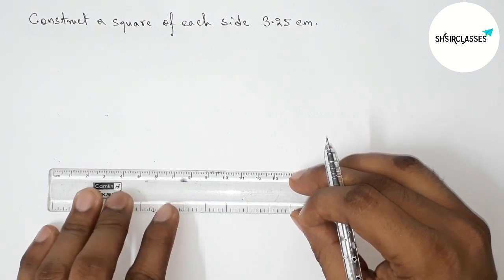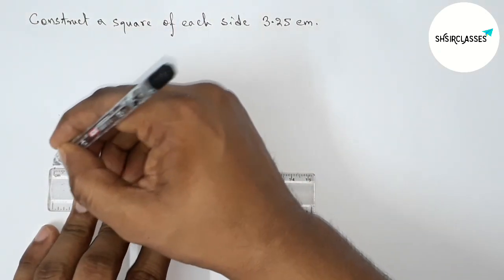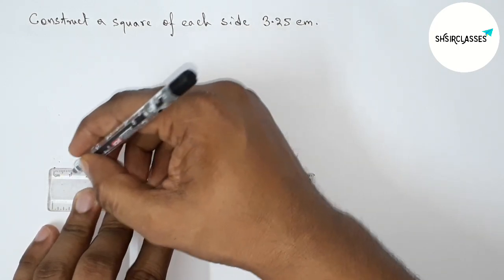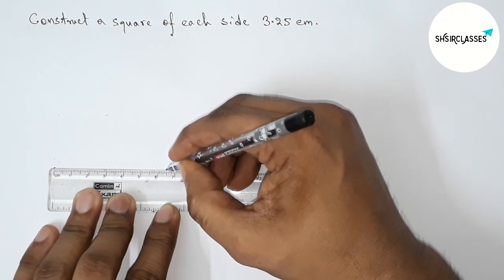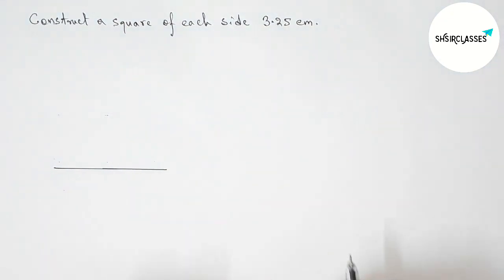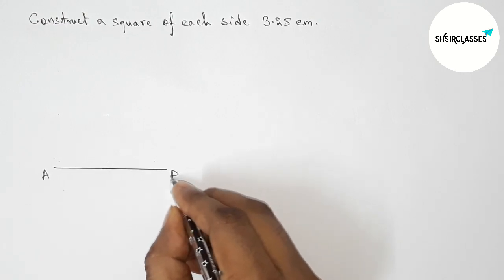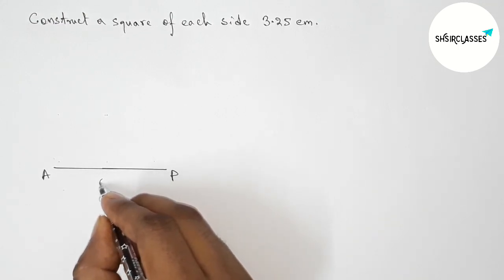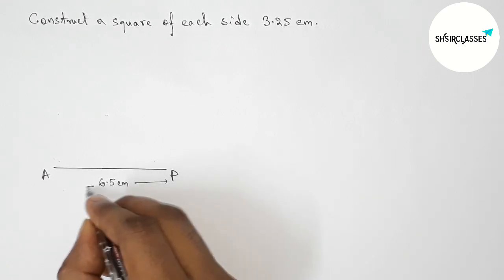First of all, draw a line segment of length 6.5 centimeters. So this is a 6.5 centimeter line segment. Now take point A here and point P here. So AP is 6.5 centimeters.